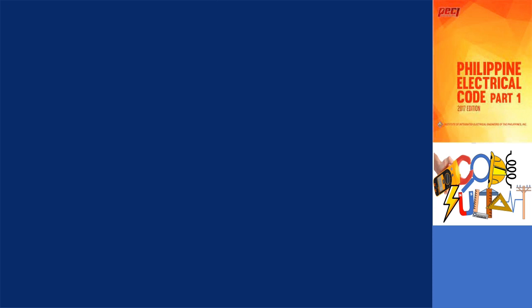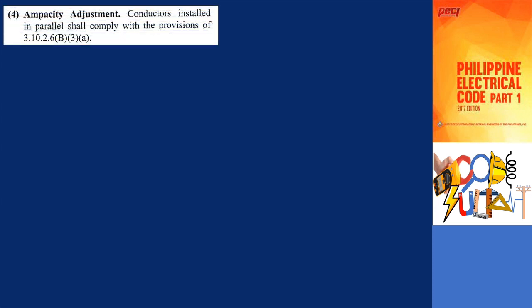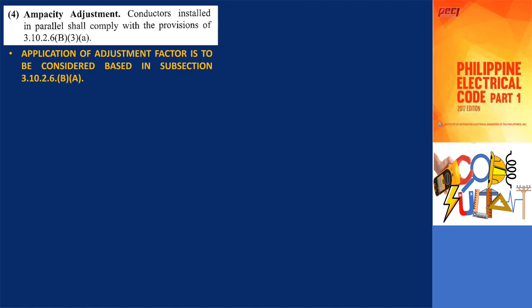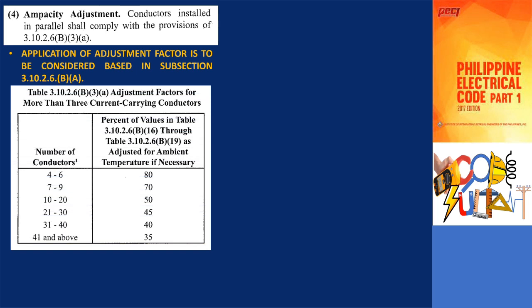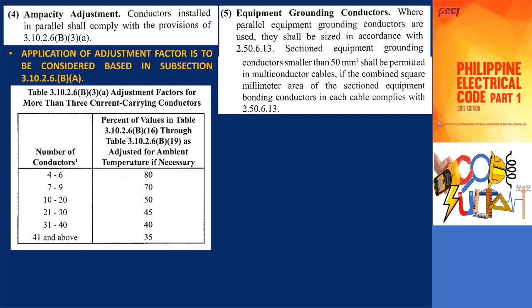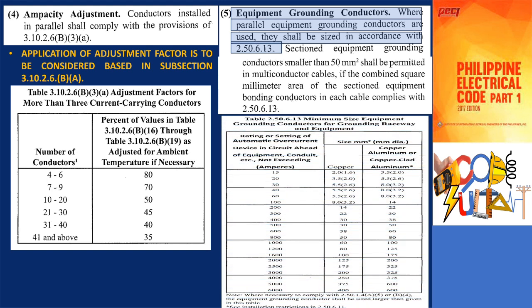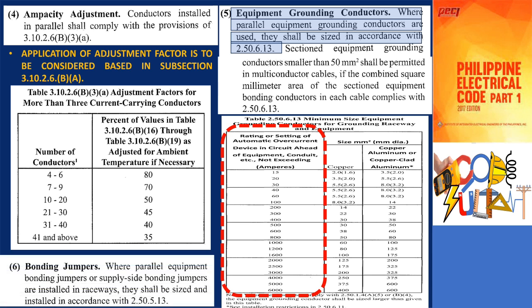In Section 3.10.2.1H4, the application of an adjustment factor is to be considered based on the guidelines provided in Subsection 3.10.2.6B(A). Furthermore, Section 3.10.2.1H5 and H6 specifically address the requirements for equipment grounding conductors and equipment bonding jumpers. The sizing of equipment grounding conductors should adhere to the specifications outlined in 2.50.6.13, which is based on the overcurrent device that is supplying power to the conductors. Similarly, the sizing of equipment bonding jumpers should follow the guidelines provided in 2.50.5.13, which is based on 2.50.3.17 and takes into account the size of the conductors being used.